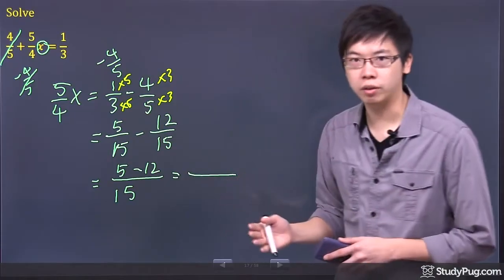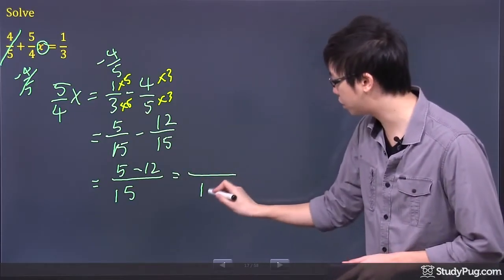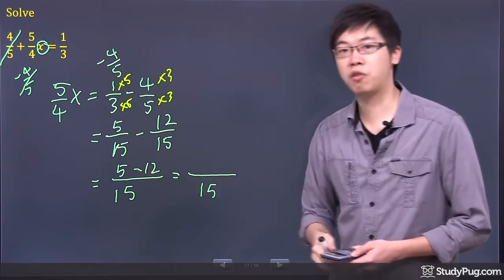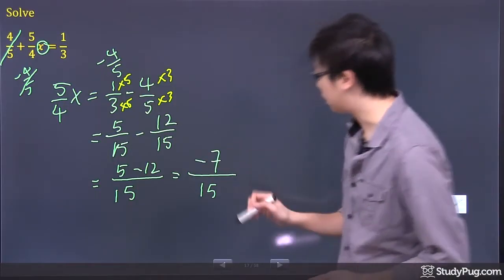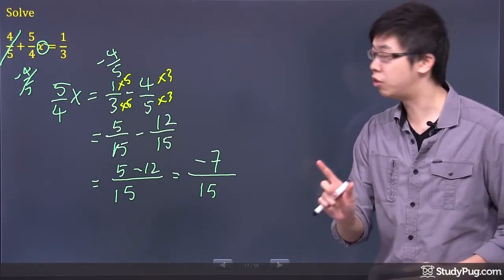So you won't do anything weird. You just keep the denominator the same, but this time, you'll just go 5 minus 12 on the top. I think it's negative 7 if I remember correctly. Yes, and that's negative 7 over 15 so far.